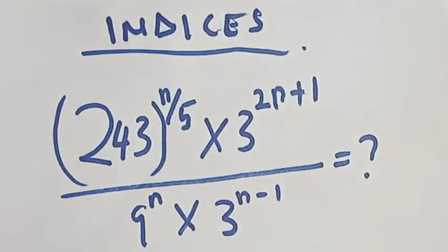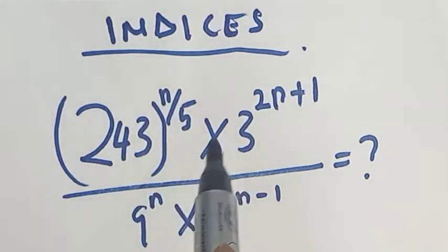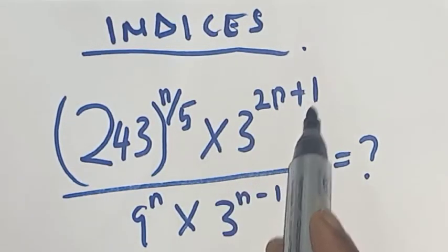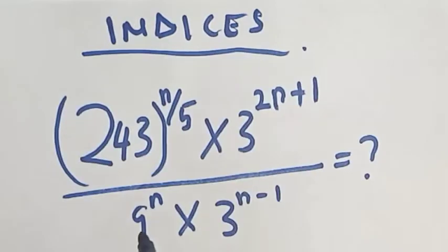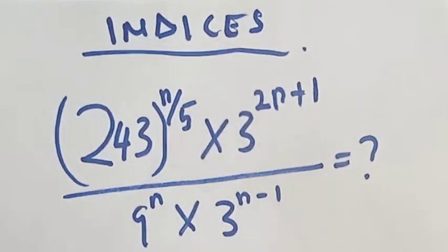Hi everyone, welcome to my class. In today's class we want to look at how to solve these indices: 243 raised to power n over 5, times 3 raised to power 2n plus 1, all over 9 raised to power n times 3 raised to power n minus 1. We want to look at how to solve this question in the easiest way.